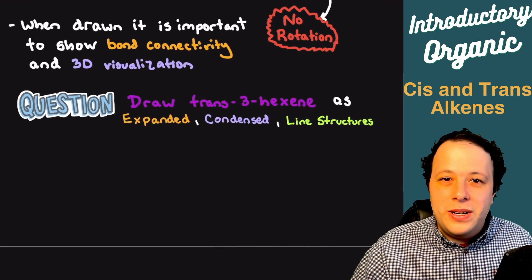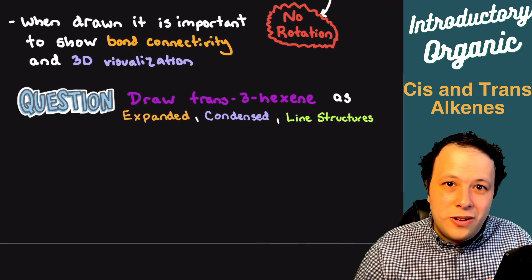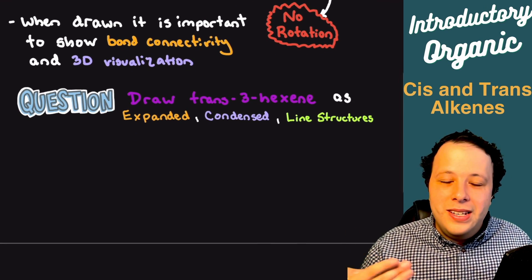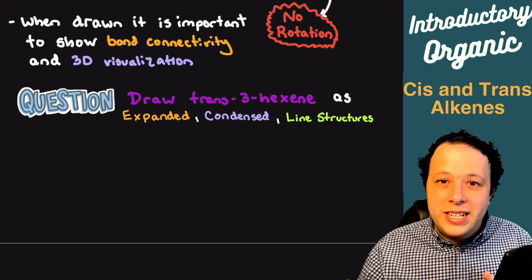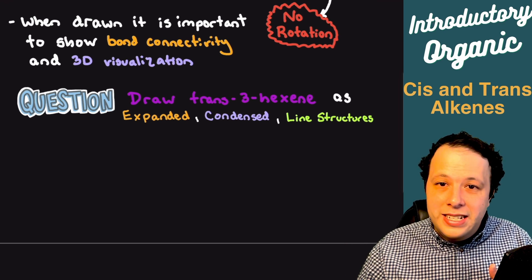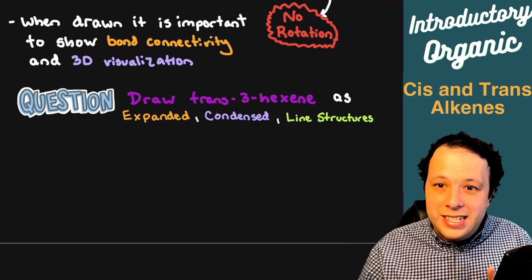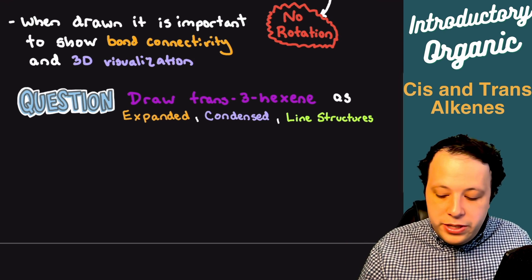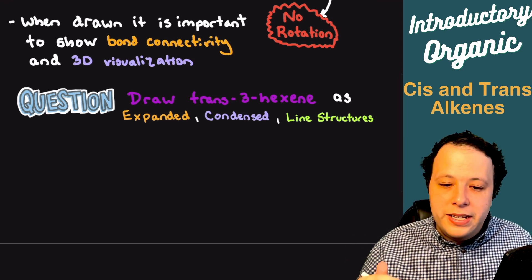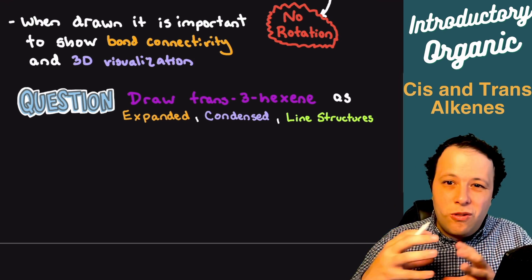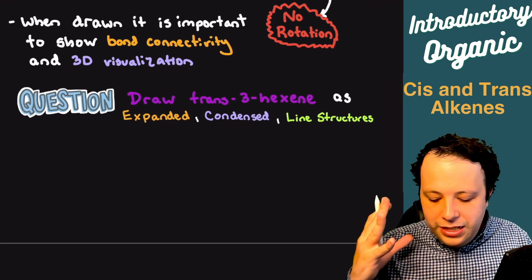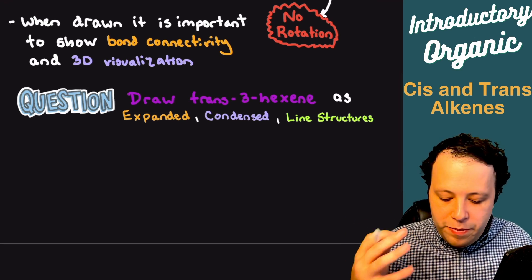A question we'll work through is how to draw 3-trans-hexene as expanded, condensed, and as a line structure. When it comes to expanded, you're drawing all the bonds including all your hydrogens, and it tends to be quite a bit of a mess.